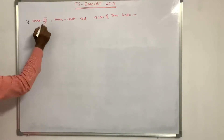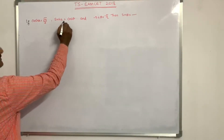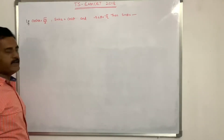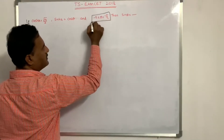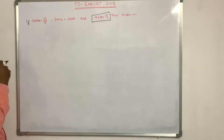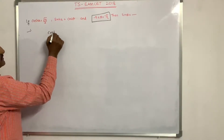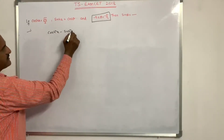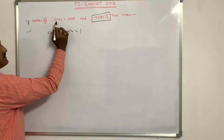If cosh(x) = √14/3 and sinh(x) = cosθ, with −π < θ < −π/2, find sinθ. We use the hyperbolic identity: cosh²x − sinh²x = 1.